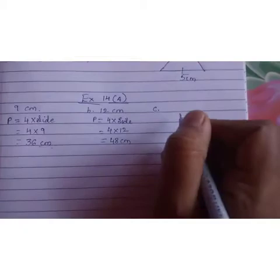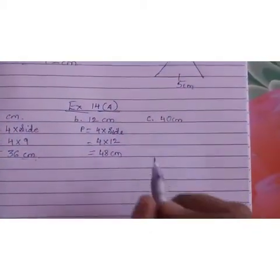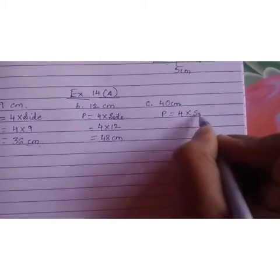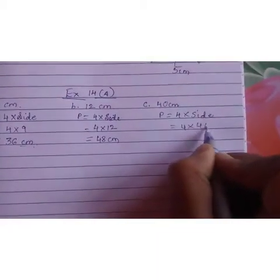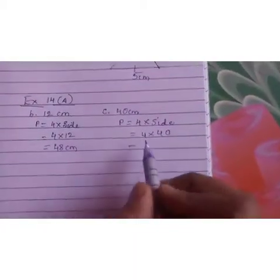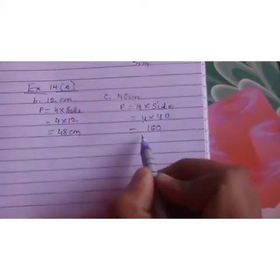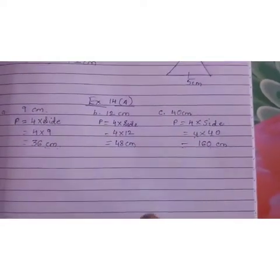Next we have 40 centimeters. So again, write P equals 4 into side. 4 into 40. 4 fours are 16 and add this 0. So it becomes 160 centimeters.